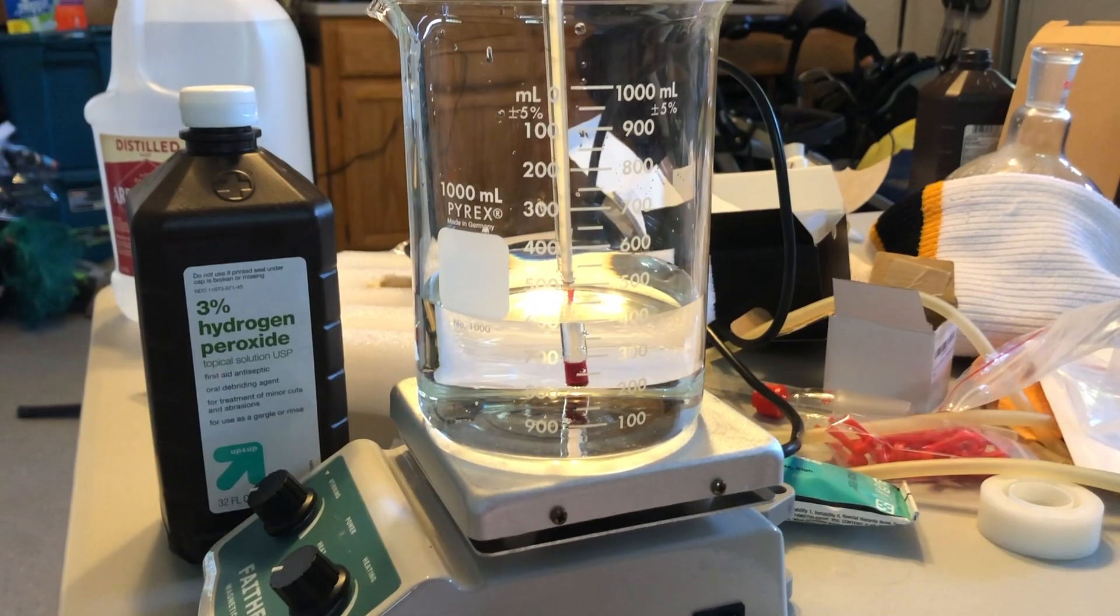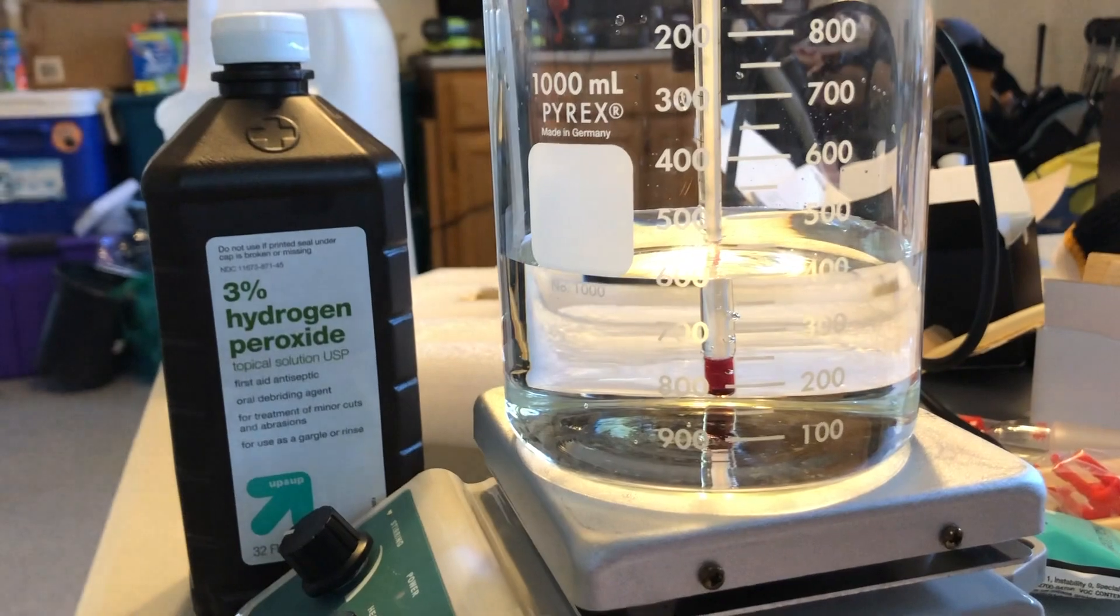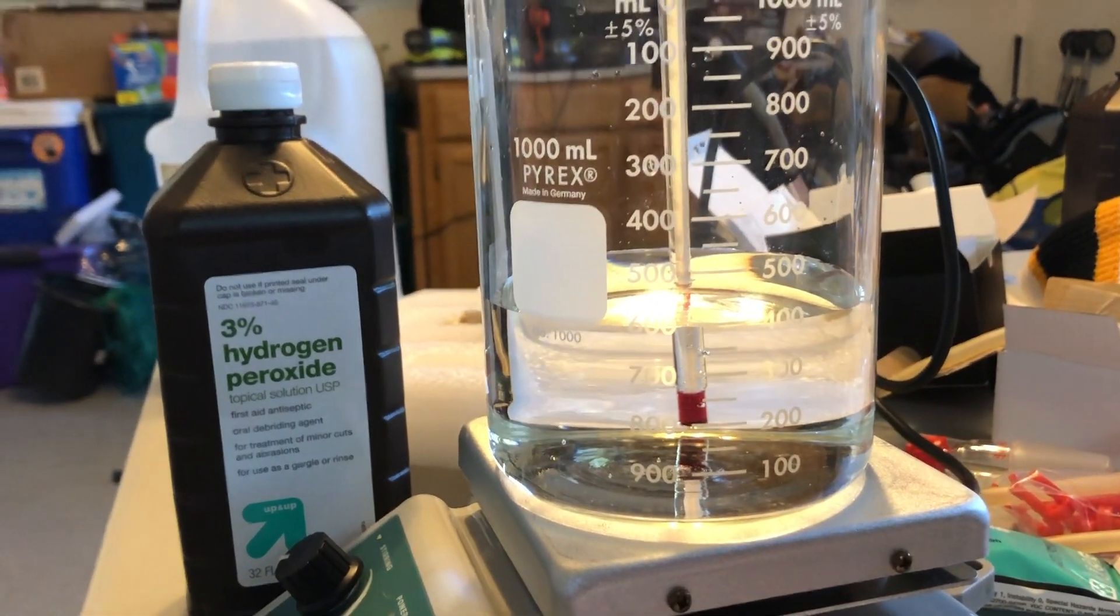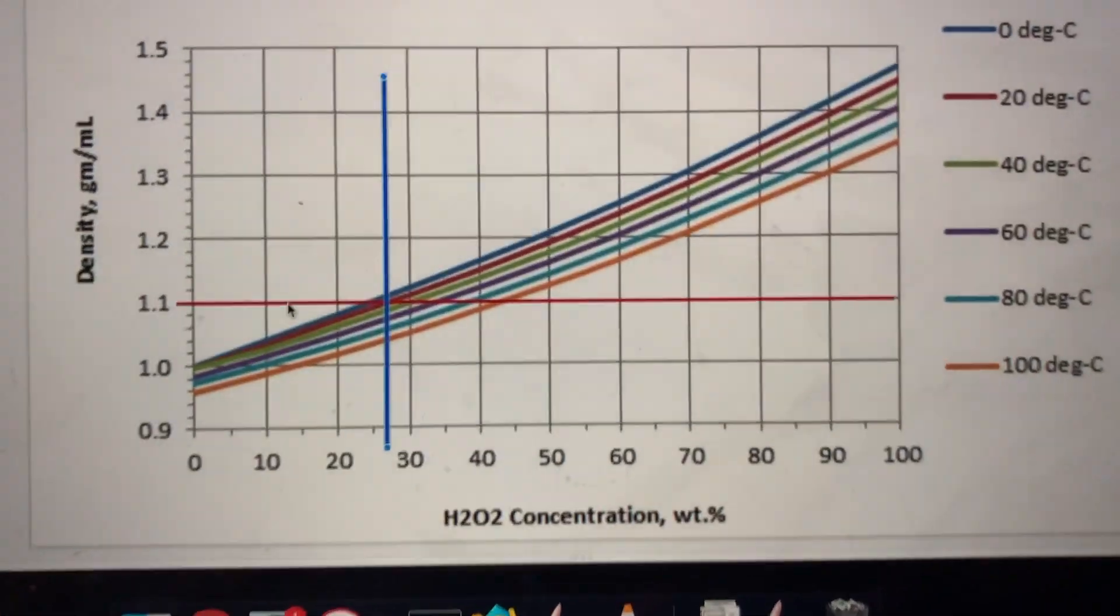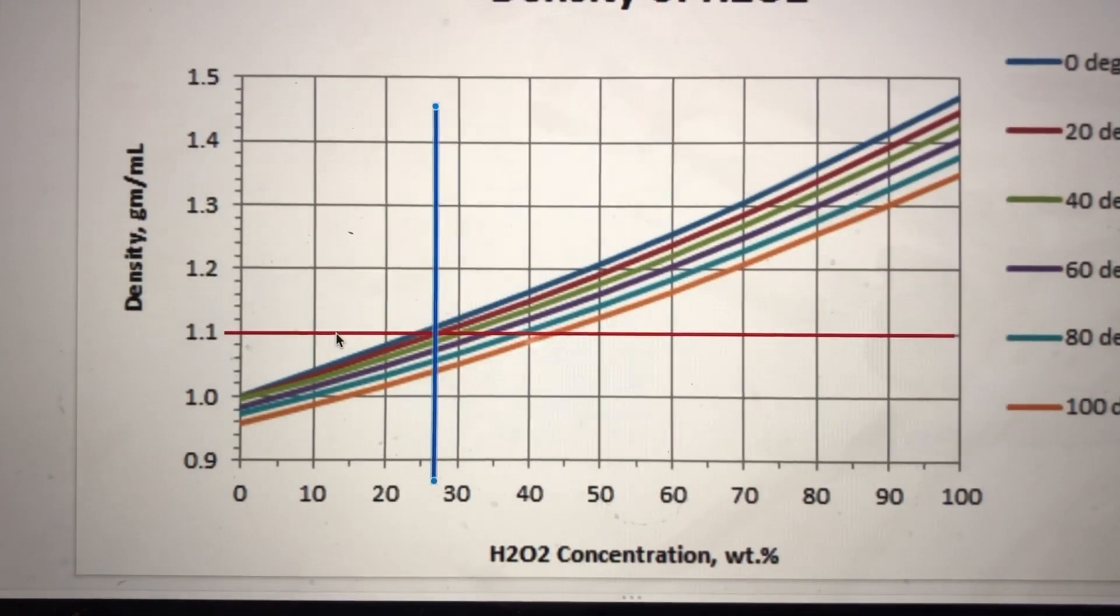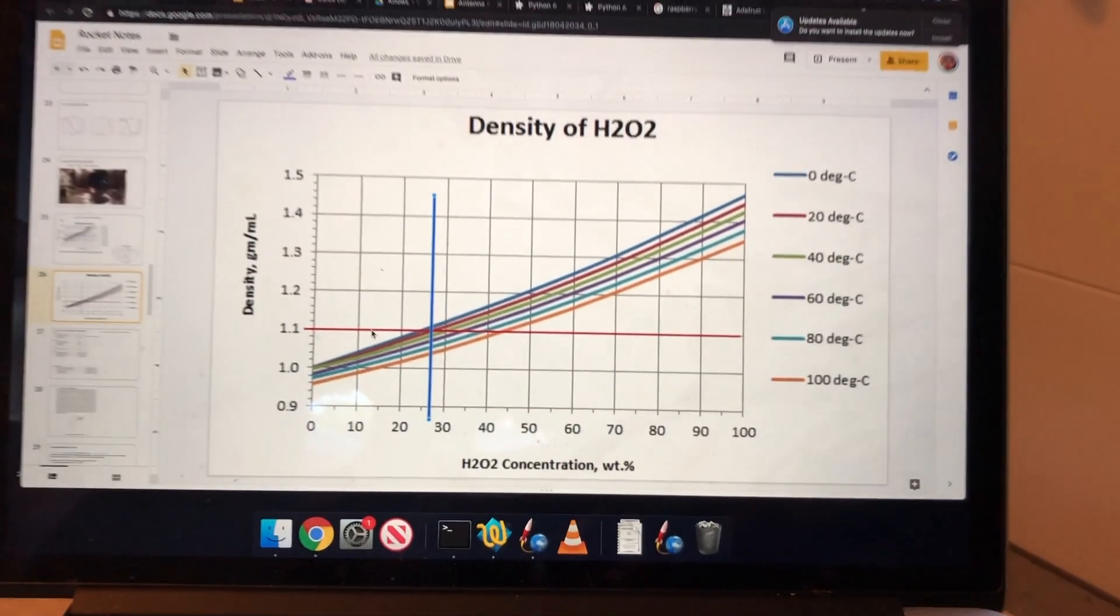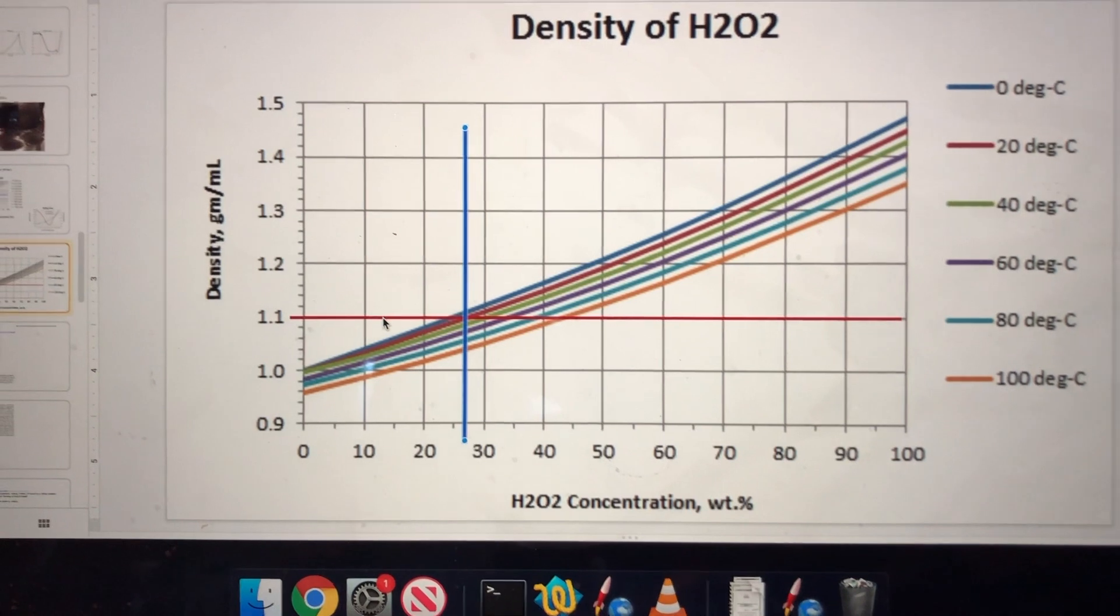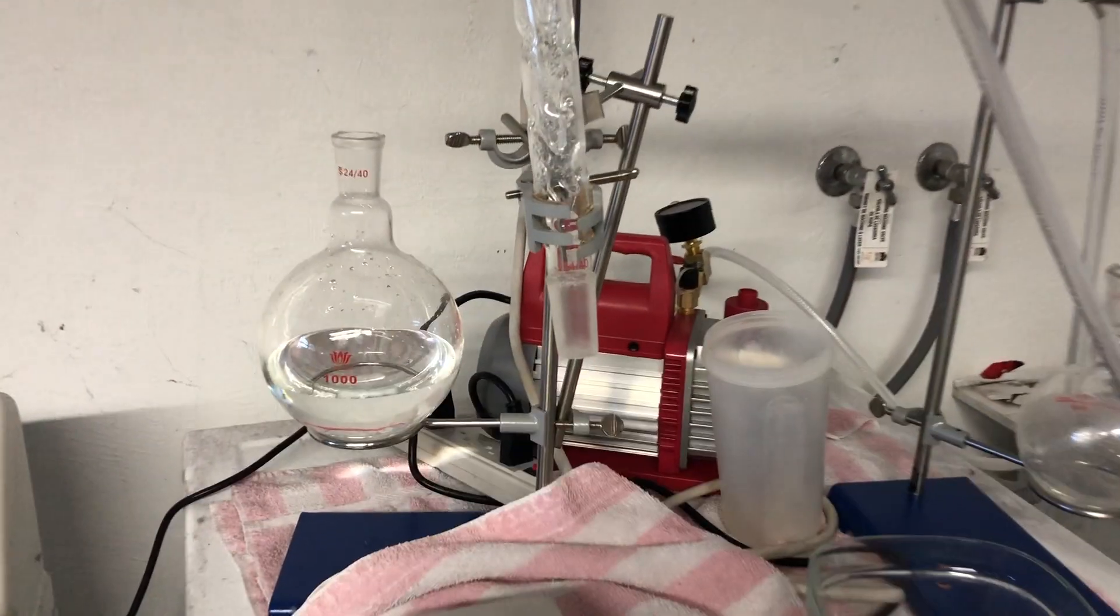I boiled it down a few more times and I ended up with about 400 milliliters of this stuff. The density was just above 1.1. So looking at our little graph here we'll call it 27%. So now we gotta figure out how to go from 27% to 90%.